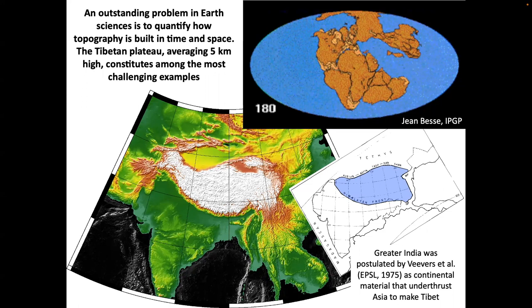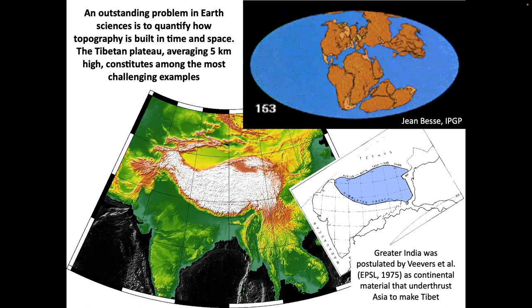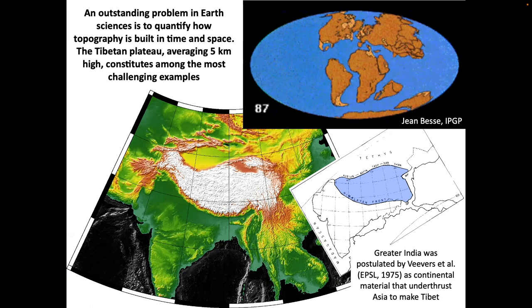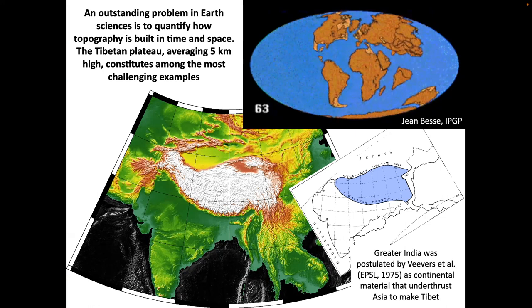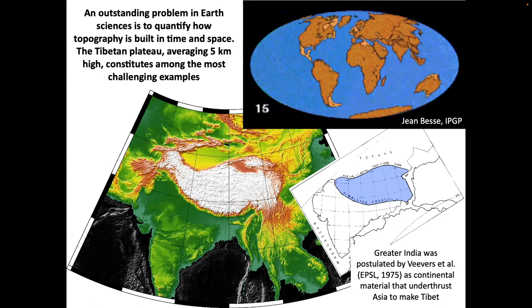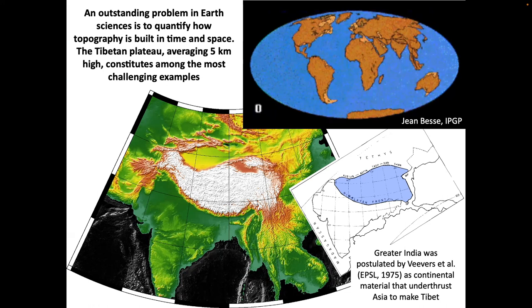I'm going to show a quick movie that has really influenced me. You have Gondwana and Eurasia with the Tethys Sea. This is an old movie by Jean Bass where he's put in a Greater India. India is in the Southern Hemisphere in the Cretaceous, then splits away and goes all the way to the Northern Hemisphere. You also see extrusion of landmass and all the deformation of Asia as it collides in.